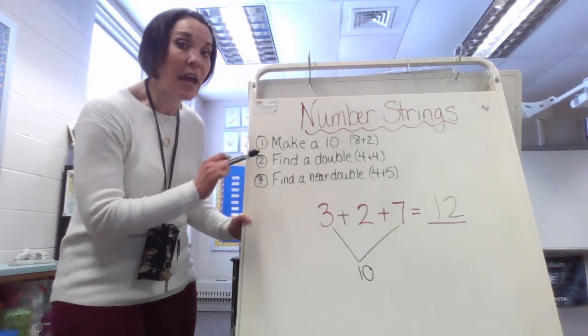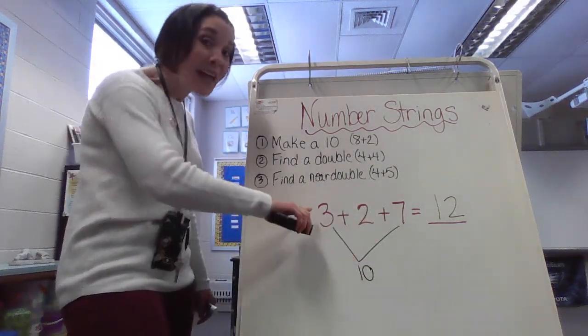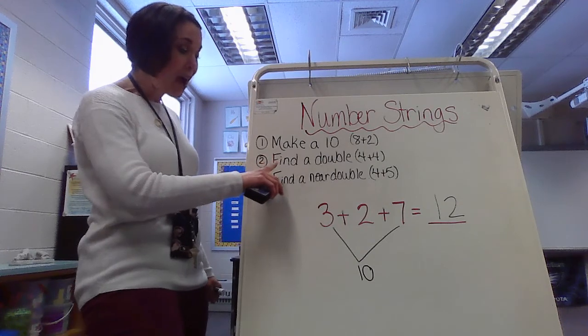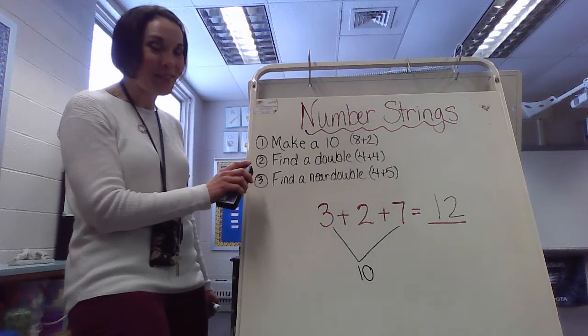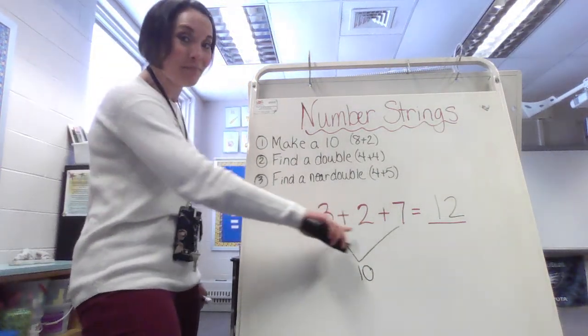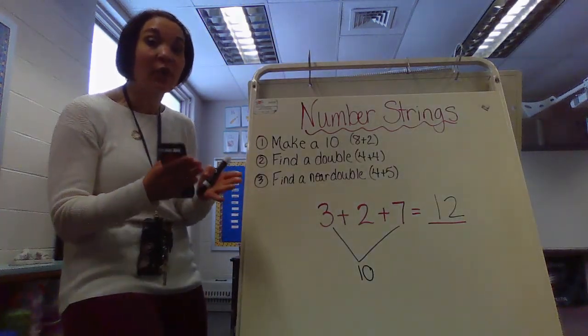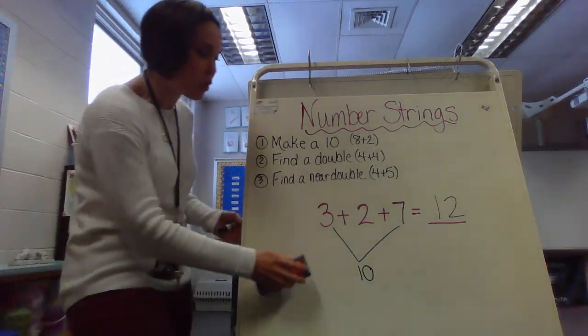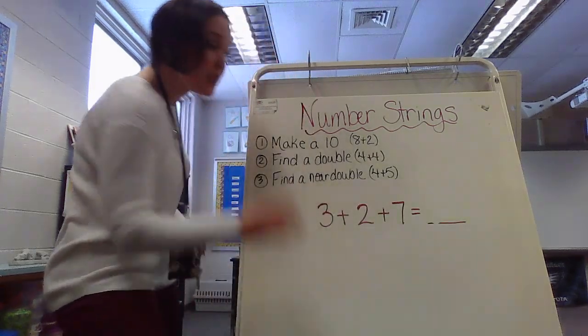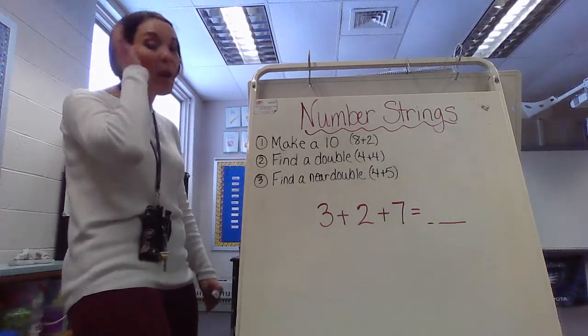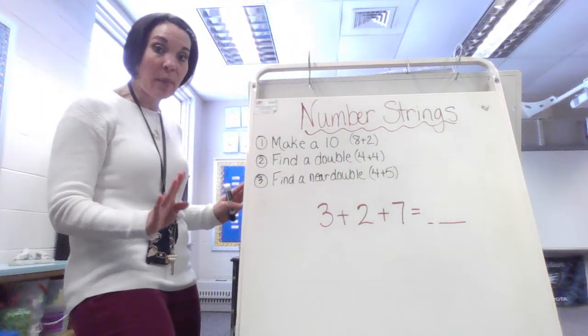Now, I want to take this and do it a different way because not only do we have a way to make 10, but we also have a near double in this particular one. Do you know where it is? It would be 3 and 2 because they're right next to each other on the number line. They're easy to identify because if you're counting, those numbers are right next to one another. And our end solution should still be 12 because remember, when we add, it doesn't matter the order. We should still get the same answer.